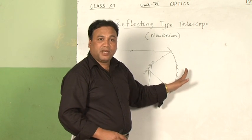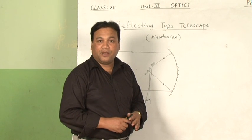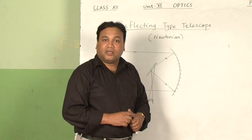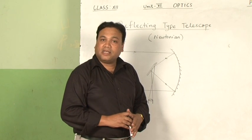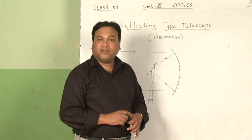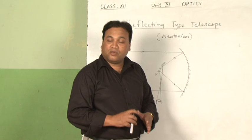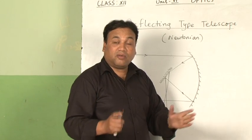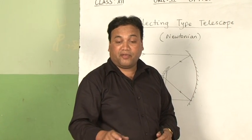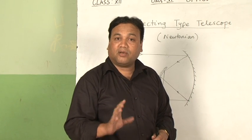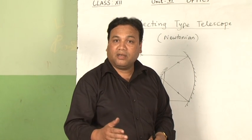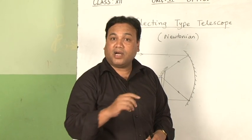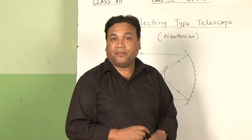With this, optical instruments and ray optics have been completed. Students, I hope you have understood what we tried to teach you. It all depends upon how you practice and how you store these things in your mind. To score good marks, please write well. While answering, read the question carefully, because astronomical telescope, reflecting telescope, and refracting type can be confusing. Do not forget to draw the diagrams with all arrow marks indicating the direction, otherwise it has no meaning. Thank you.